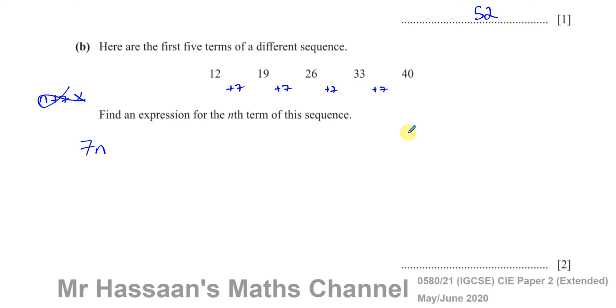But the problem is we want it to start from 12. This is going to start from seven. If I put n equals one, I'm going to get seven. n equals two, I'm going to get 14. n equals three, I'm going to get 21. I want it to start from 12. I want the first term to be 12. So if I put n equals one, I'm going to get seven. How do I make seven into 12? Well, I have to add five to it.